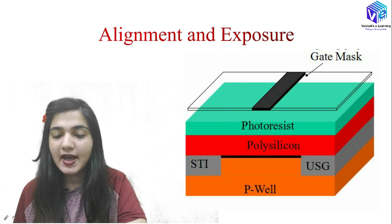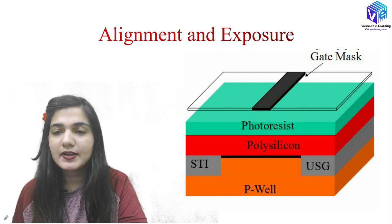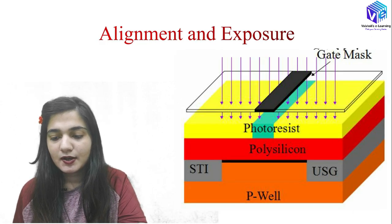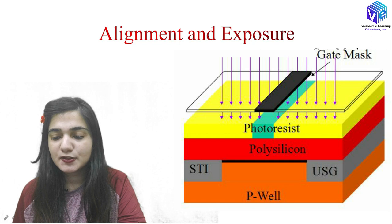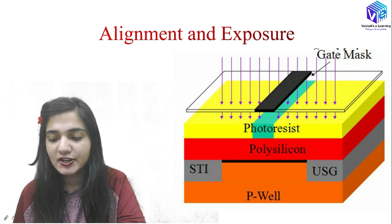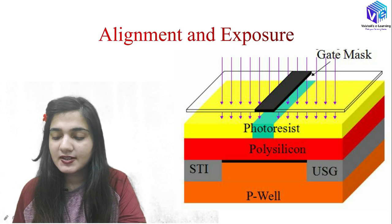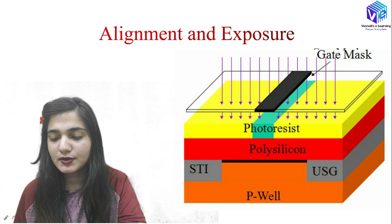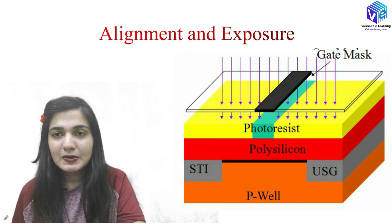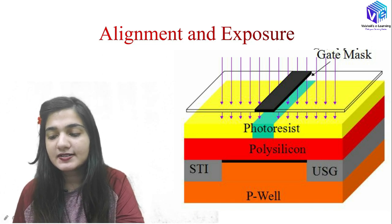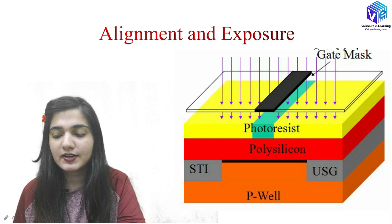After alignment and exposure we do the post exposure bake, and the thickness decreases somewhat. Then we have the development phase, where we are removing all of the yellow part. This was the positive photoresist — in positive photoresist we remove all of the exposed part. The yellow part becomes more soluble and the chemicals dissolve it, whereas the sky blue part was harder and stayed.